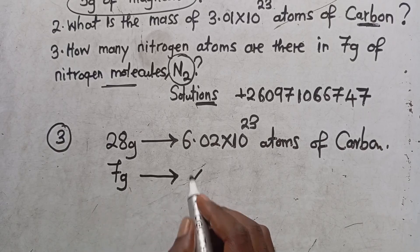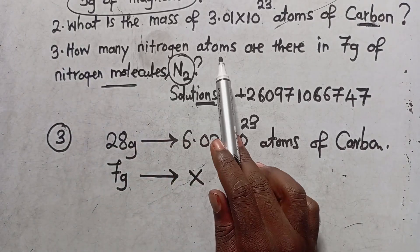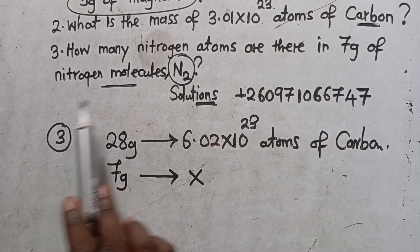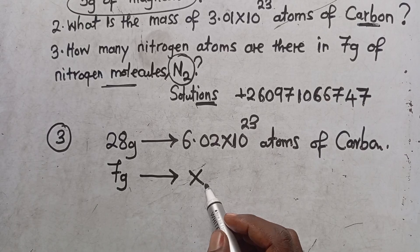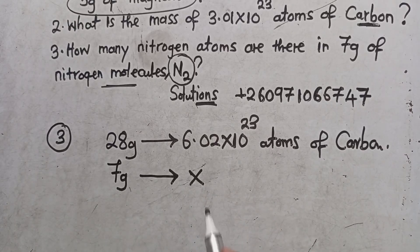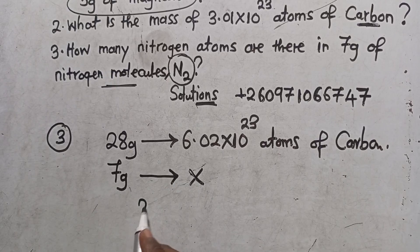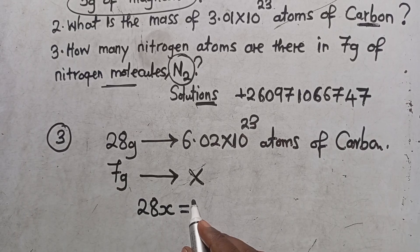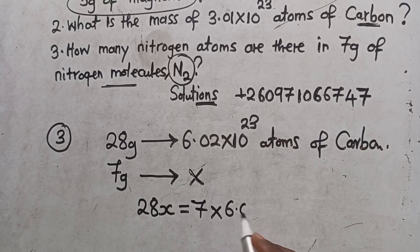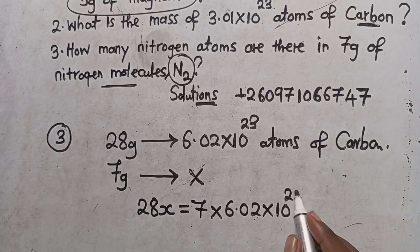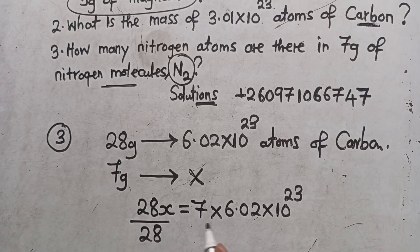Then I'm given seven grams, so I'm going to say seven grams equates to X. Because the question is asking how many nitrogen atoms are there in seven grams of nitrogen molecules. My concentration is on the numbers. So I'm going to say X times 28 equals 28X, which is equal to 7 multiplied by 6.02 times 10 to the power 23. Divide both sides by 28 — this and that will be cancelled.